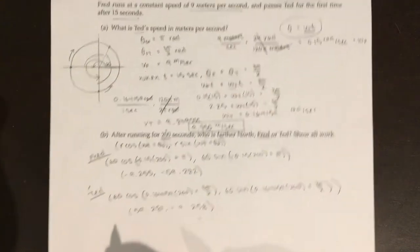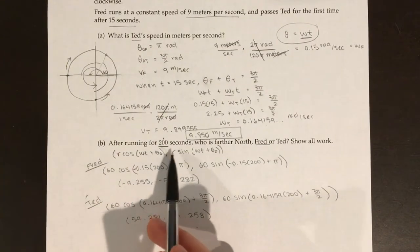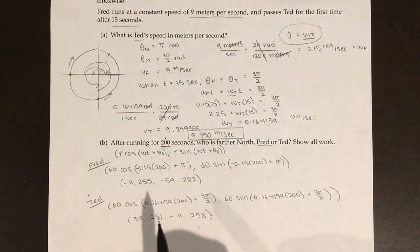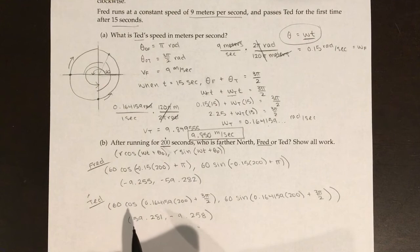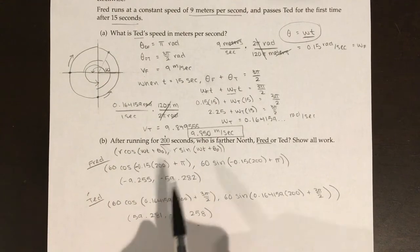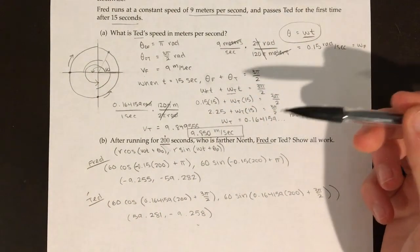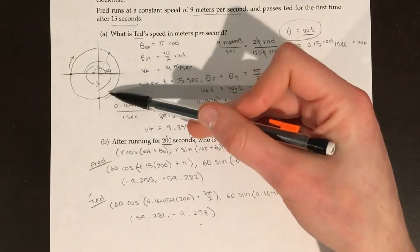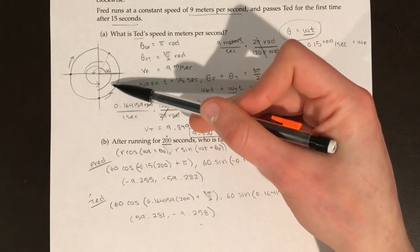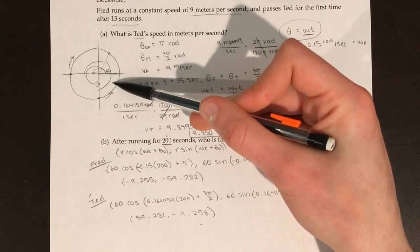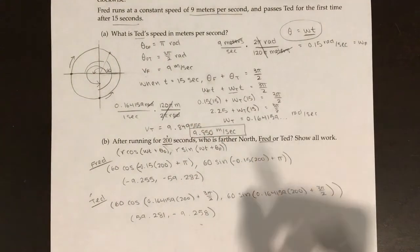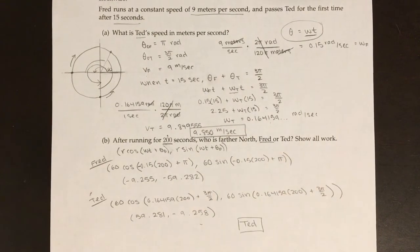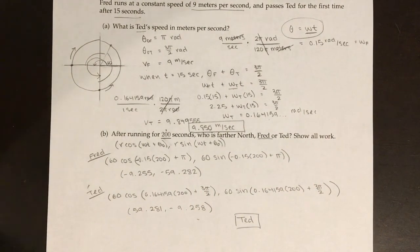The question asks who is farther north after 200 seconds. All we need to look at is the y-coordinate, since we're finding how far up each person is. Fred is at y = −59.282, and Ted is at y = −9.258. Ted is still in the negatives, but he's much closer to zero, so Ted is ultimately farther north after 200 seconds.